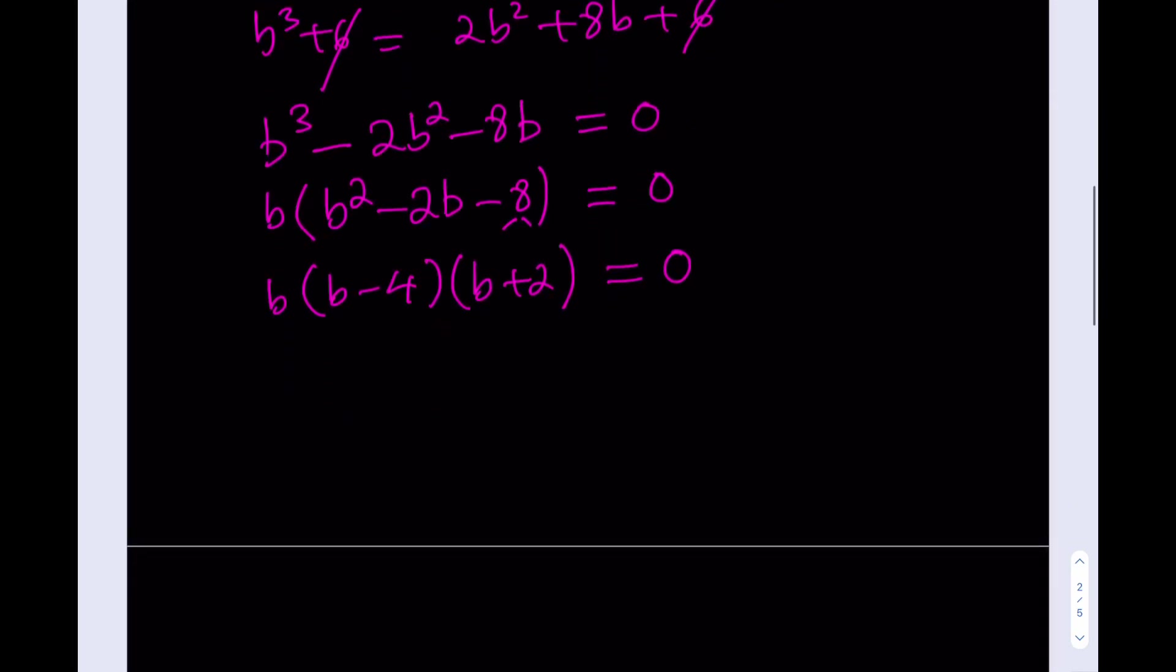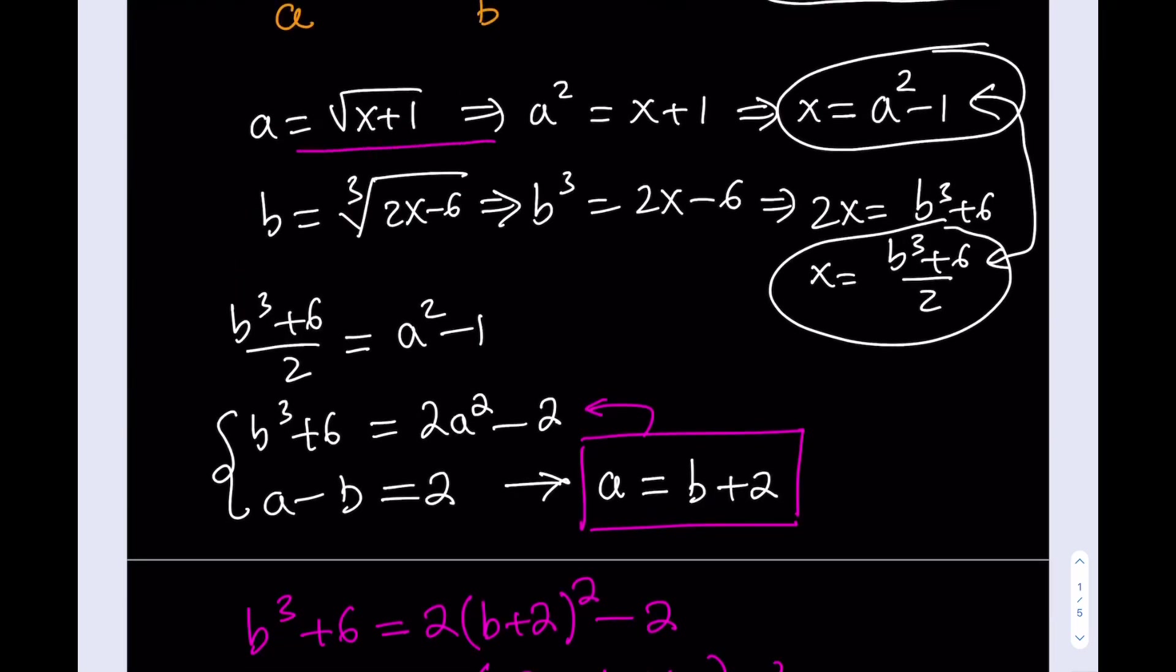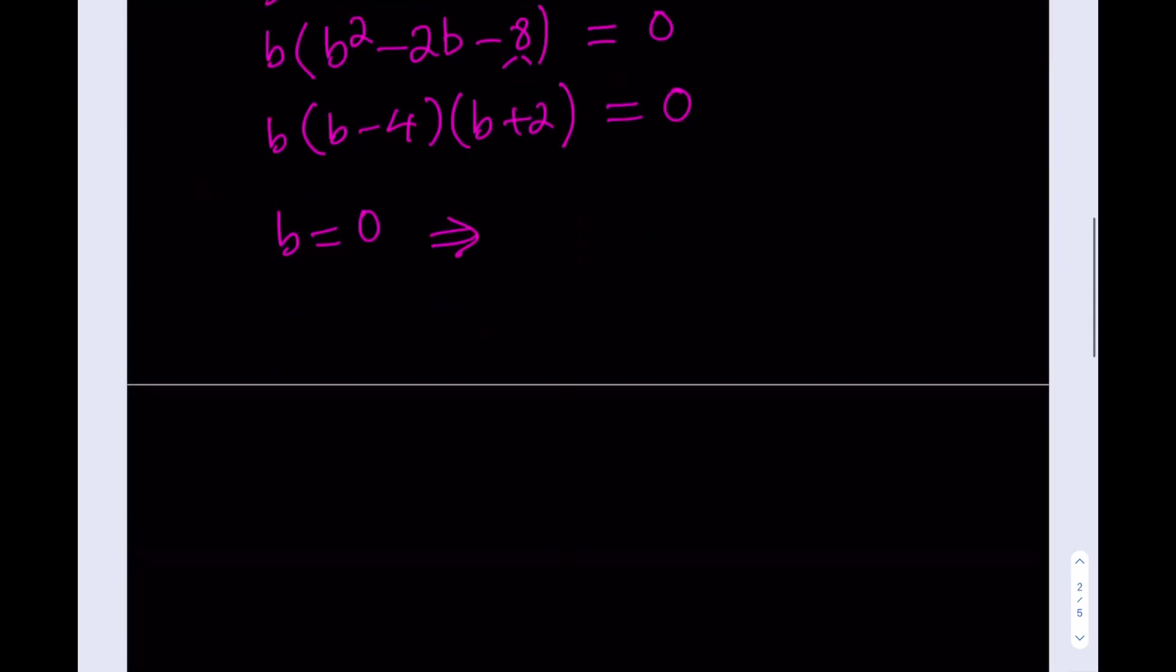Now, what am I going to do? I'm going to write each solution. But remember, we were trying to solve for x, not for B. So, let's go ahead and consider each situation. If B is equal to 0, what happens? I got to go back here and consider the relationship between B and x. Or, if you want to make it even better, we can use this one. x is equal to B cubed plus 6 divided by 2. So, if B is equal to 0, then x is equal to 3. Awesome. That's my first solution.